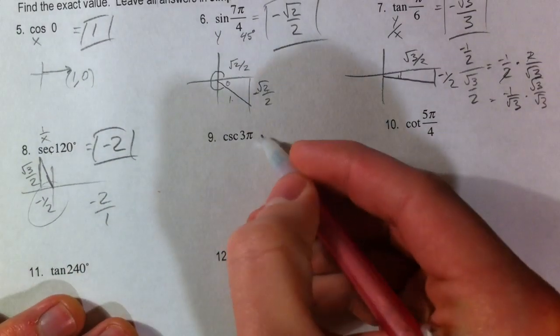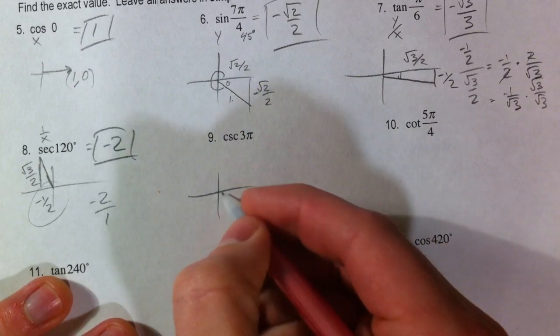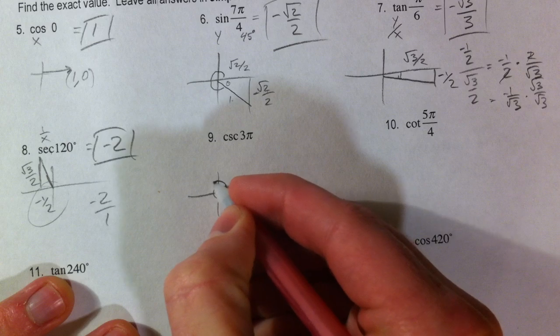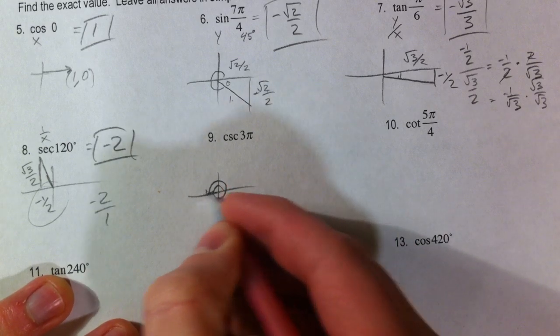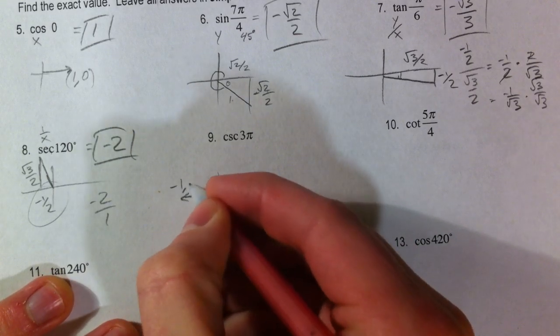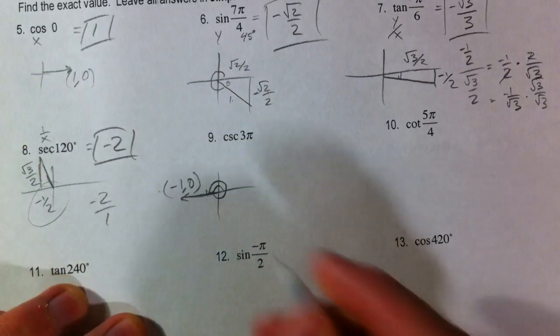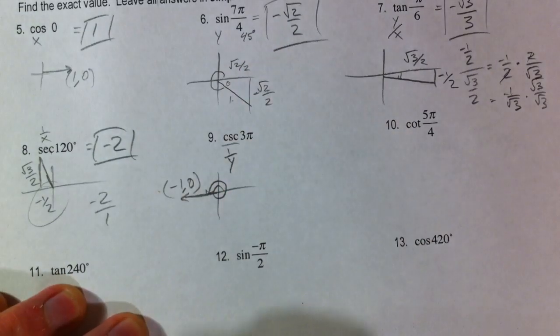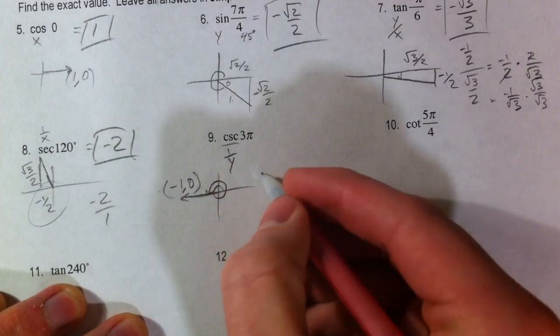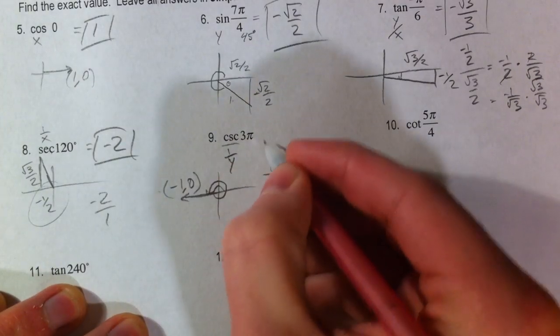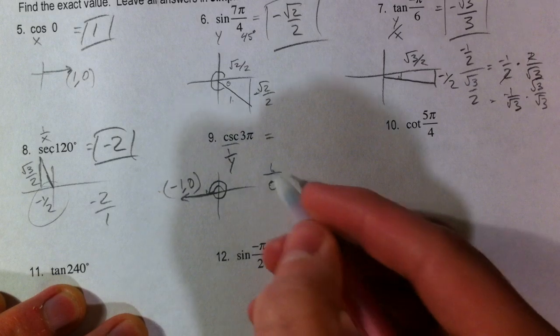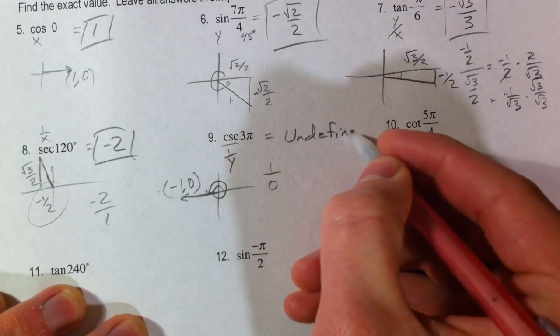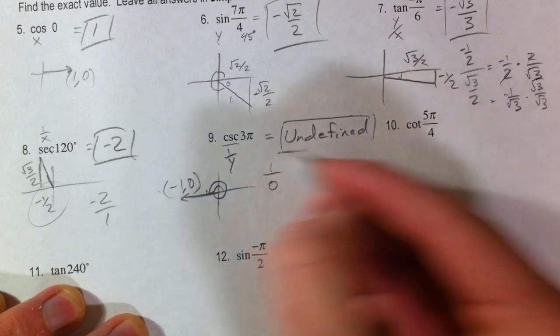Cosecant of 3π. So, we've gone all the way around once, which is 2π, plus another. And so, we're over here at negative 1 comma 0 because we've gone to the left. Cosecant is the reciprocal of the sine, which is the y. And so, it's the reciprocal of 0. There is no reciprocal of 0. 1 divided by 0 is undefined. So, we don't have a cosecant value.